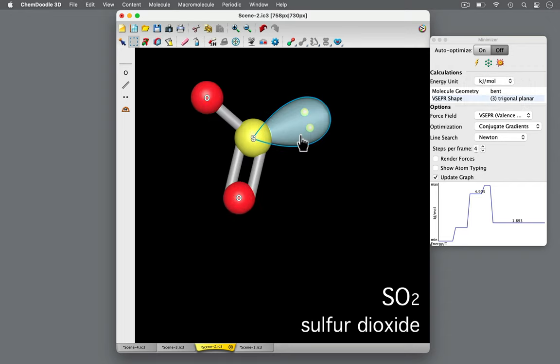This lone pair also influences the bond angle in a bent molecule. It occupies a larger space about the central sulfur atom and has stronger repulsion.